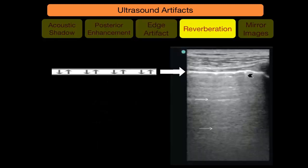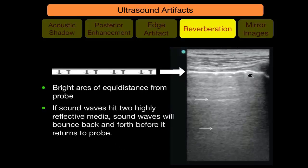Reverberation artifact — the sound wave passes through a highly reflective structure like pleura and lung. Some sound returns to the probe immediately, while some bounces back and forth between the pleura and lung before returning to the probe with a time delay. The machine interprets this delay as an additional line at a deeper location, and these lines are equidistant from each other.